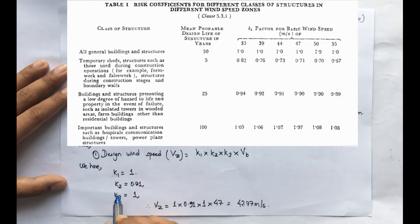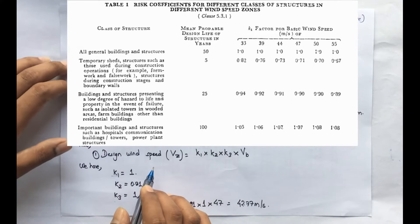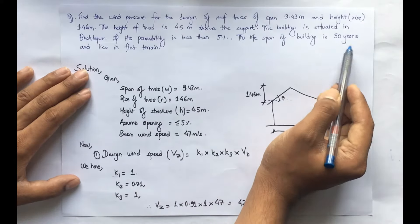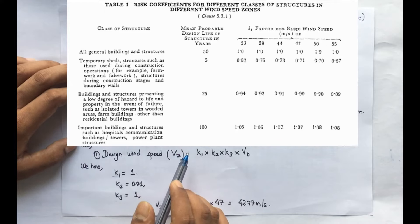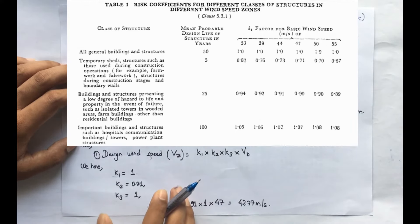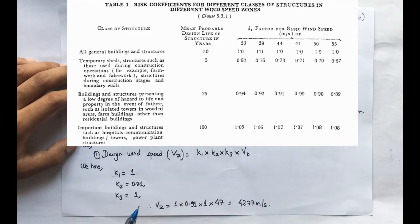For k1, the risk coefficient, refer to Table 1, page 11 for all general buildings and structures. The mean design life is 50 years as stated in the question. For a basic wind speed of 47 m/s with a mean life of 50 years, k1 is taken as 1.